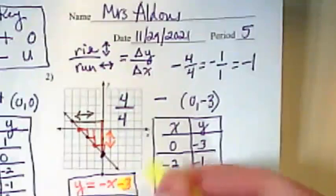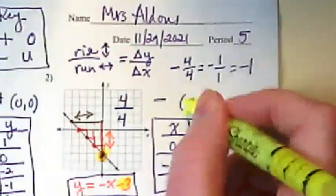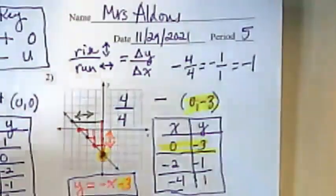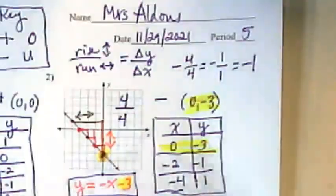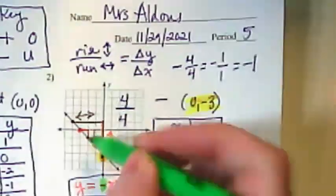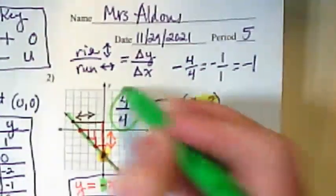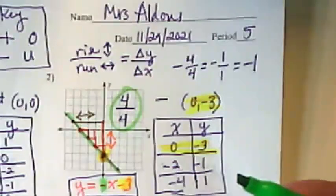And I want to point out to you where I'm getting those parts from. This minus 3 is from this point, which is also this, which is also this. It's my y-intercept, right? Where did I get this negative x from? The fact that it's a negative line and its slope is 4 over 4 and we leave the one invisible.